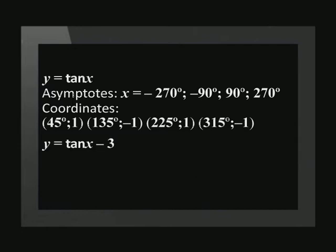The value of q is -3. This means that the graph has moved 3 units down, and we need to subtract 3 from each y-coordinate.